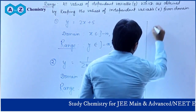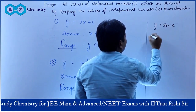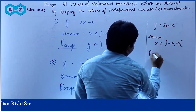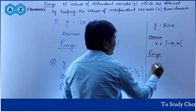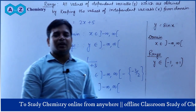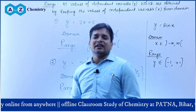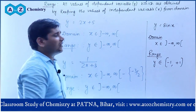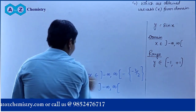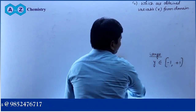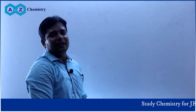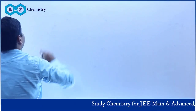y is equal to sin x का domain x belong to minus infinity to plus infinity लेकिन range यहाँ पर minus 1 से plus 1 — in close bracket — मतलब sin का value minus 1 से plus 1 के बीच में ही होगा। यह range और domain का definitions है। यह इसलिए पढ़ाया गया है ताकि आप trigonometric function और algebraic function को आसानी से समझ सको।